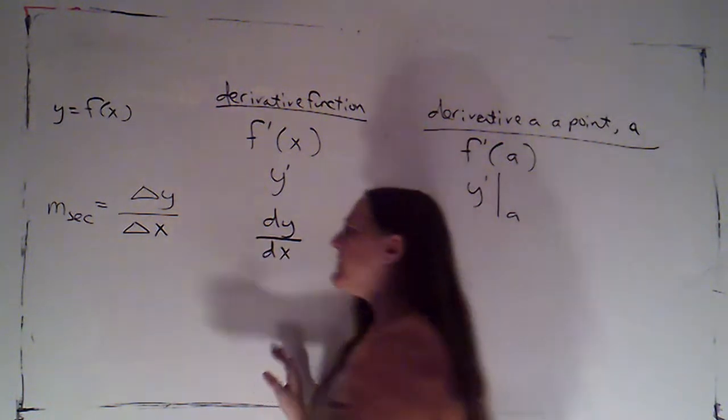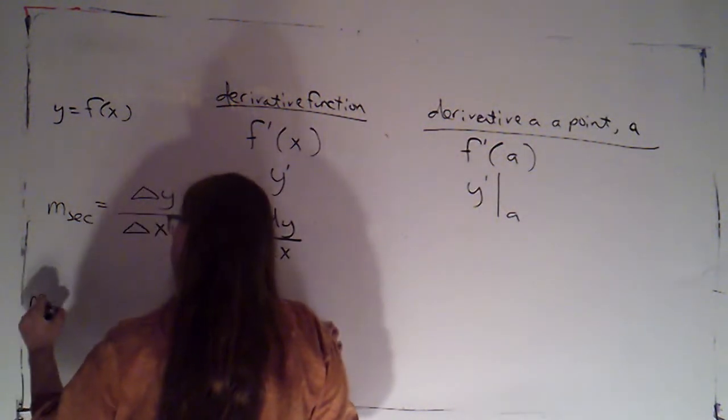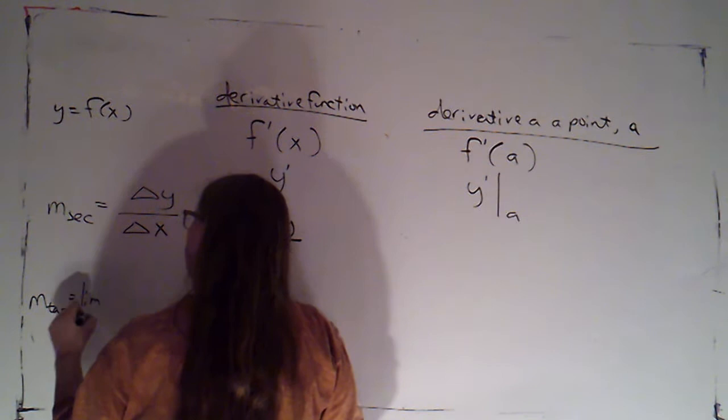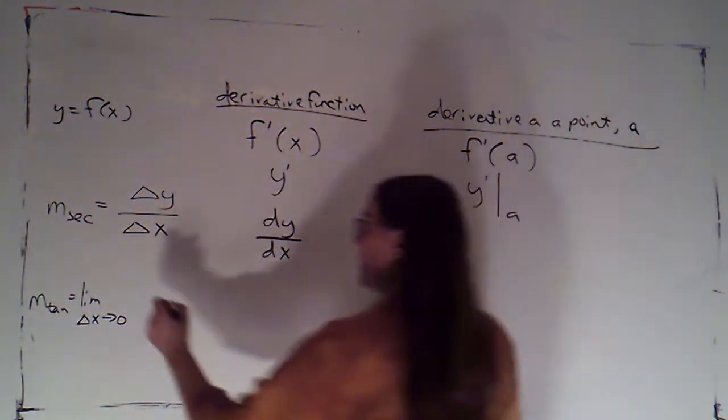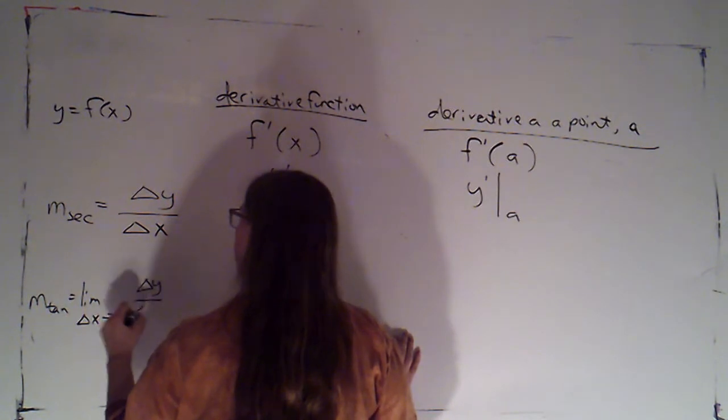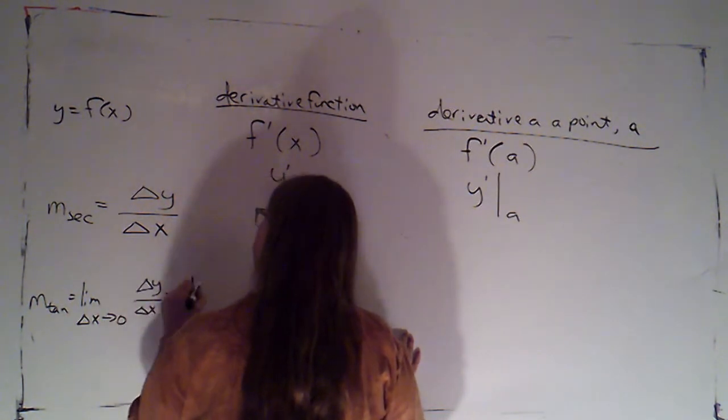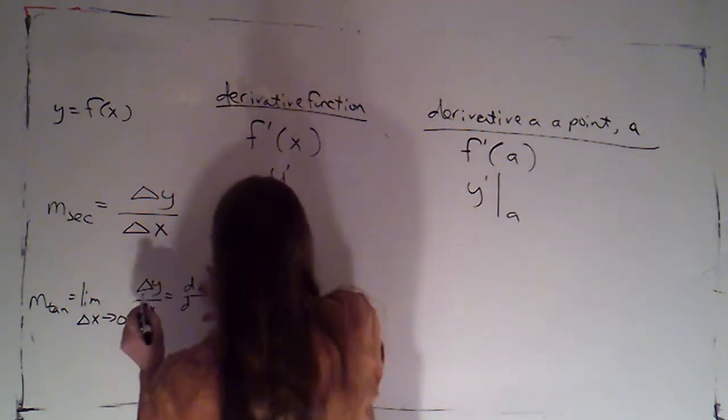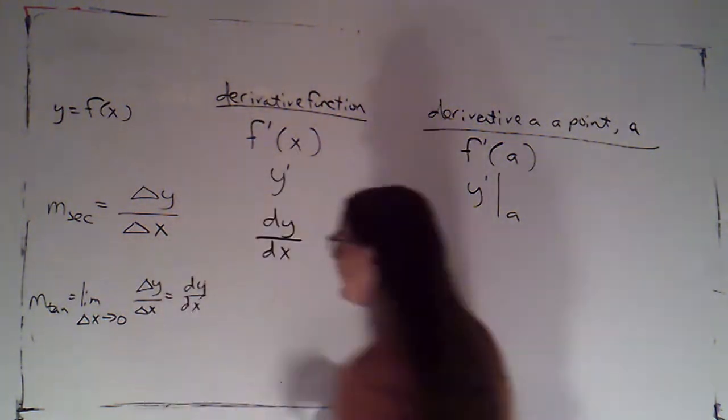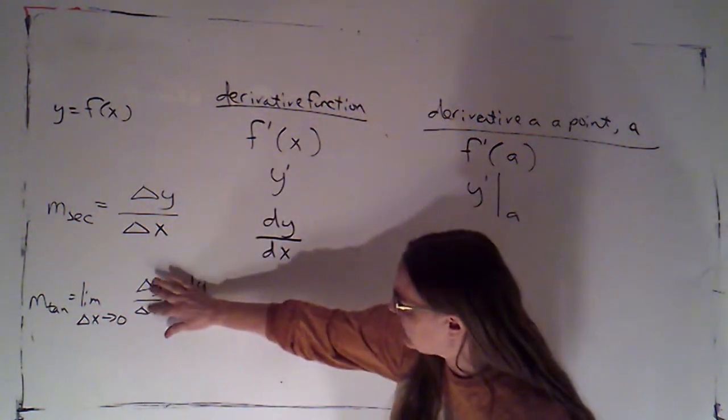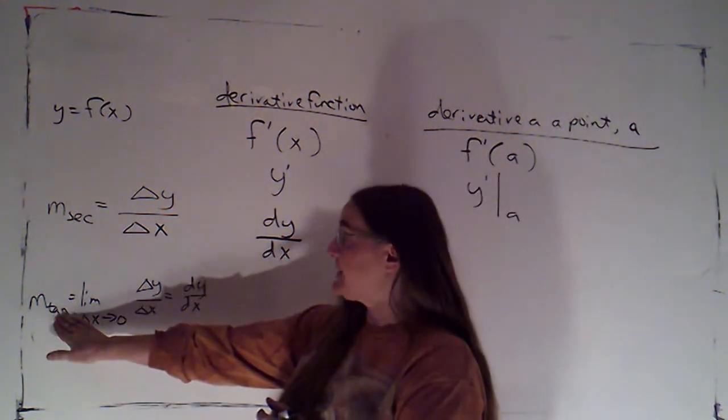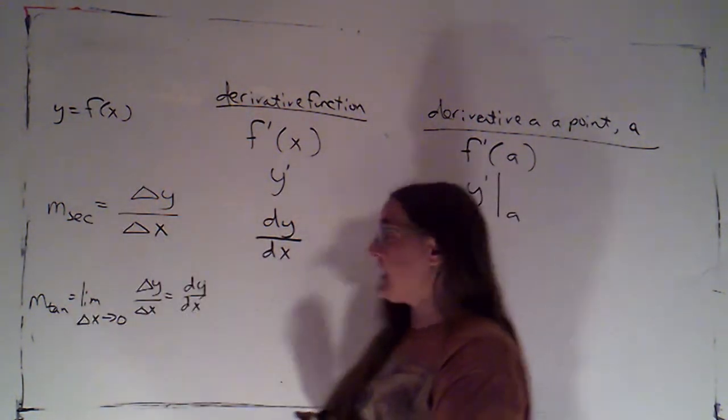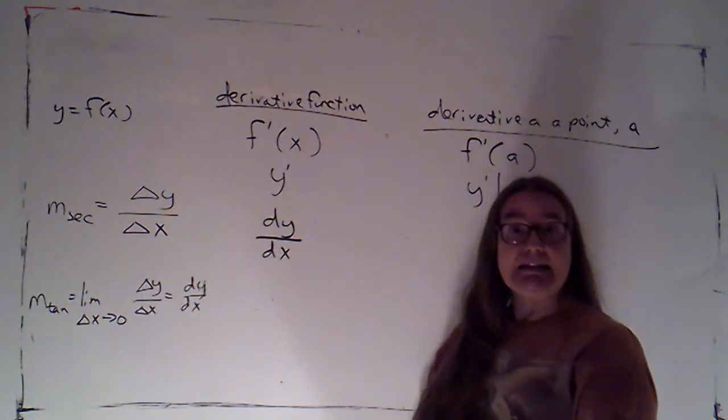Well, the slope of the tangent line is just the limit. And it would be the limit as delta x, as the run goes to zero, of delta y over delta x. And the notation that Leibniz came up with is that when you take the limit of these deltas to indicate that you've taken the limit so that you're now talking about the slope of a tangent rather than the slope of a secant, you replace them with d's.